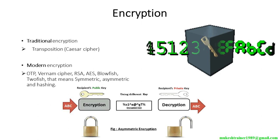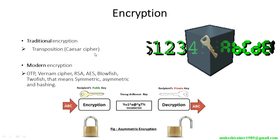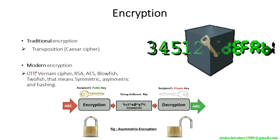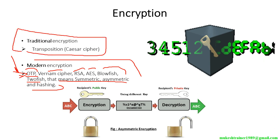What is encryption? Traditional encryption uses transposition and Caesar cipher techniques. Modern encryption methods we use today include OTP (one-time pad), especially for banking sectors during online transfers, as well as stream ciphers, RSA, AES, and Blowfish/Twofish — covering symmetric, asymmetric, and hashing encryption.